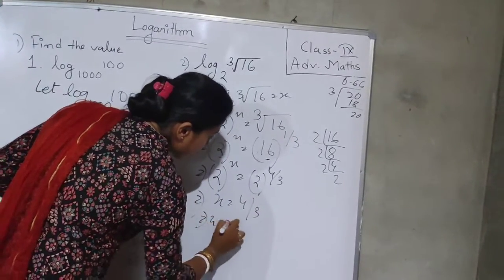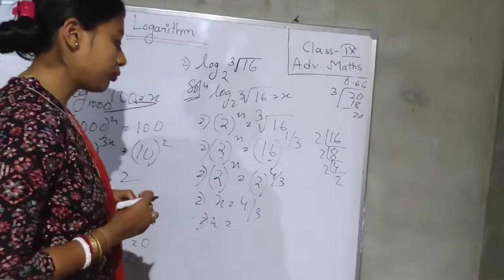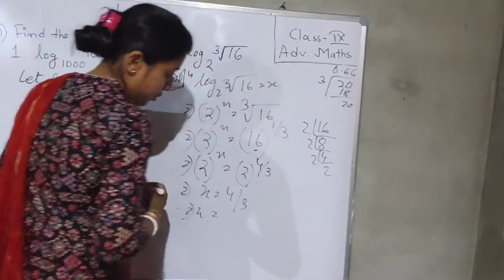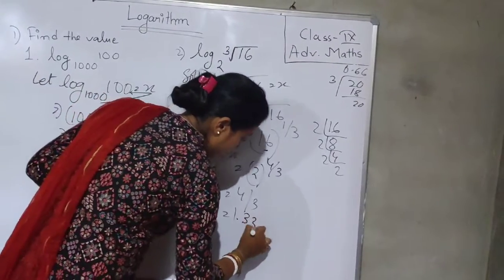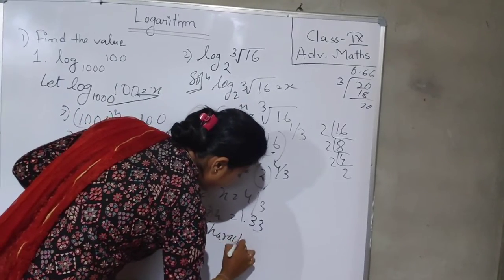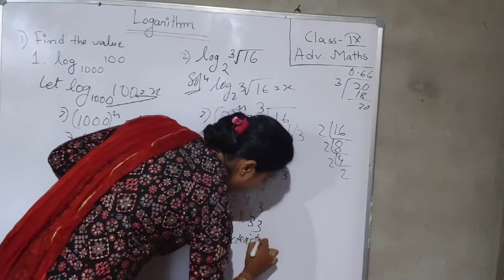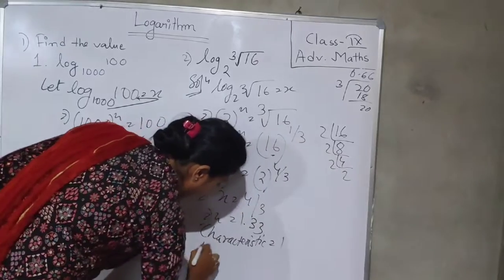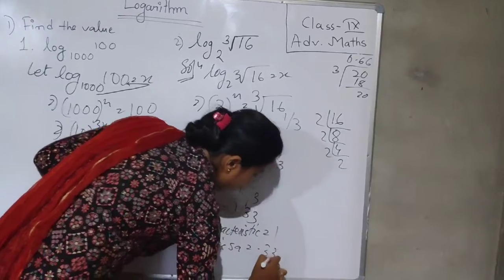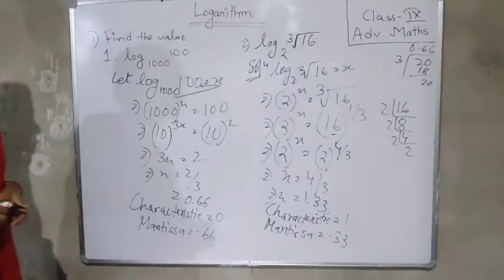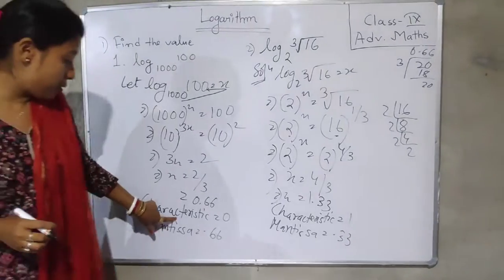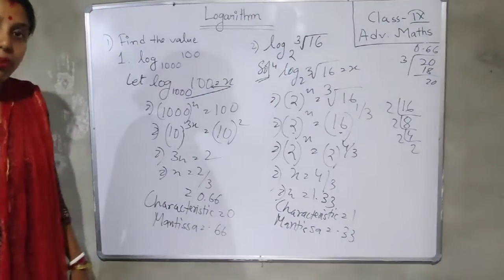Dividing 4 by 3 gives approximately 1.33. So here the characteristic is 1, which is the integral part, and the mantissa is 0.33. After finding the value of the log, we have also learned how to extract the characteristic and mantissa.